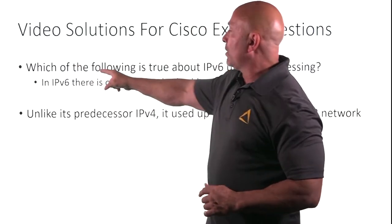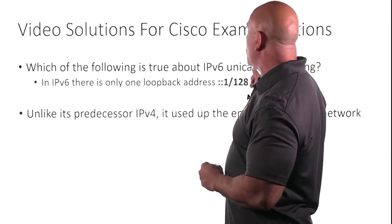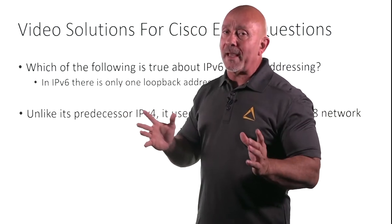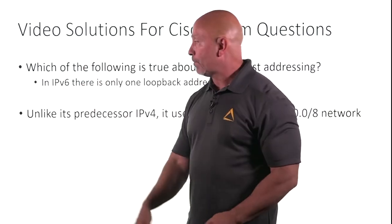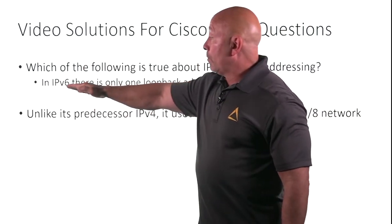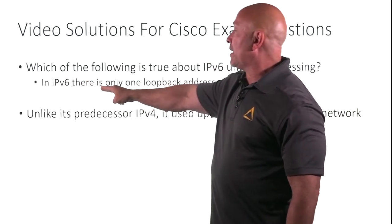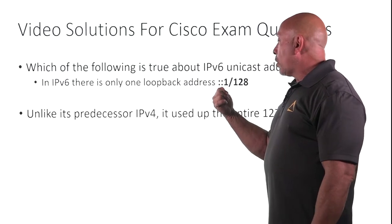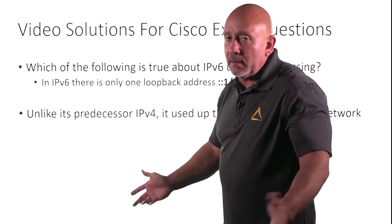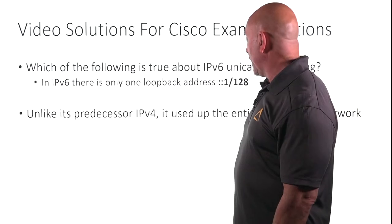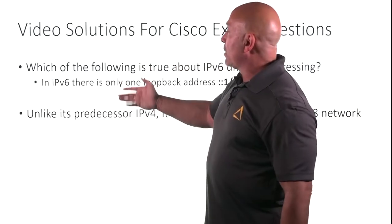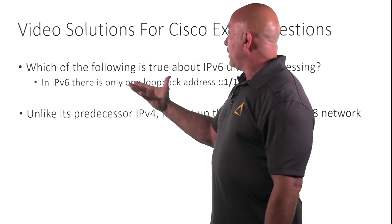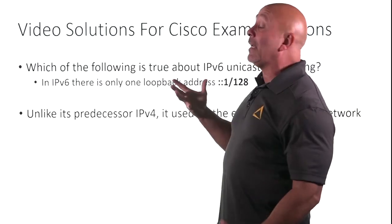Which of the following is true about IPv6 unicast addressing? We just said the local unicast starts with FC00::/7, divided into two parts. But here, the answer would be: in IPv6 there's only one loopback address — ::1/128. We know this already. Unlike IPv4, which used the entire 127.0.0.0/8 range, IPv6 has just one. It's a bit of a funny question because it asks about unicast addressing, but when you look at the answers, this is clearly the one that makes sense.